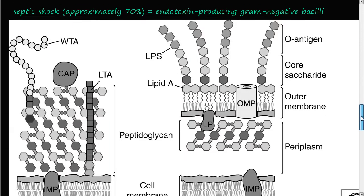About 70% of all cases of septic shock are caused by endotoxin-producing gram-negative bacilli. These bacteria produce an endotoxin, which is why it's also called endotoxic shock. The majority of this endotoxin is LPS — lipopolysaccharide.